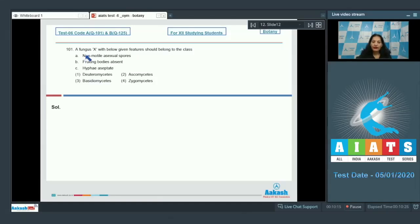Question number 101: A fungus X with the below given features should belong to which class? The features are non-motile asexual spores, fruiting bodies absent, and hyphae aseptate. First of all, please emphasize on the C point which says hyphae aseptate. If the hyphae are aseptate, then the class should be phycomycetes. Now is there any option which says phycomycetes?